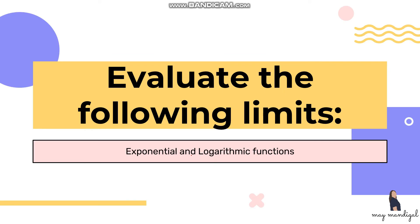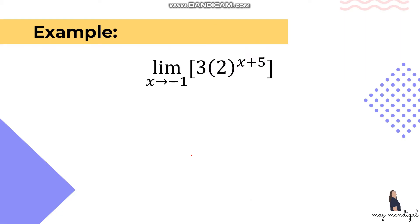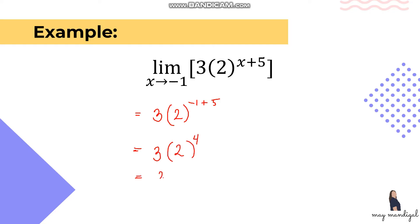Let's evaluate more limits involving exponential and logarithmic functions. Find the limit of 3 times 2 raised to (x+5) as x approaches -1. We do direct substitution: 3 times 2 raised to (-1+5), which simplifies to 3 times 2 raised to 4. Since 2^4 is 16, we multiply by 3 to get 48. So the limit of the function as x approaches -1 is 48.